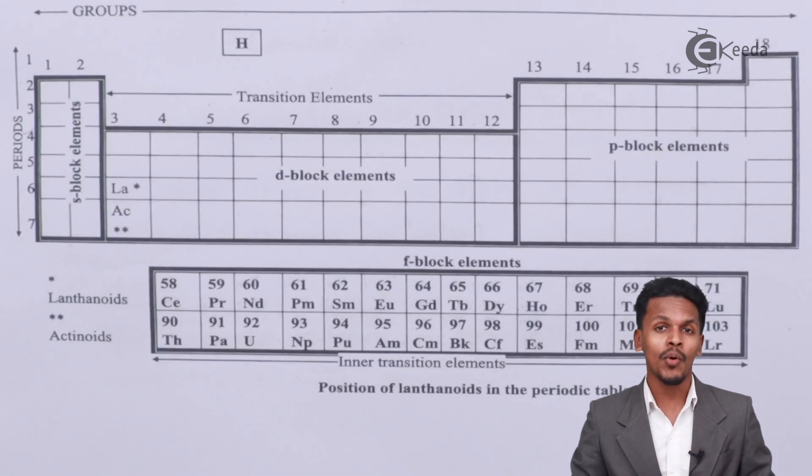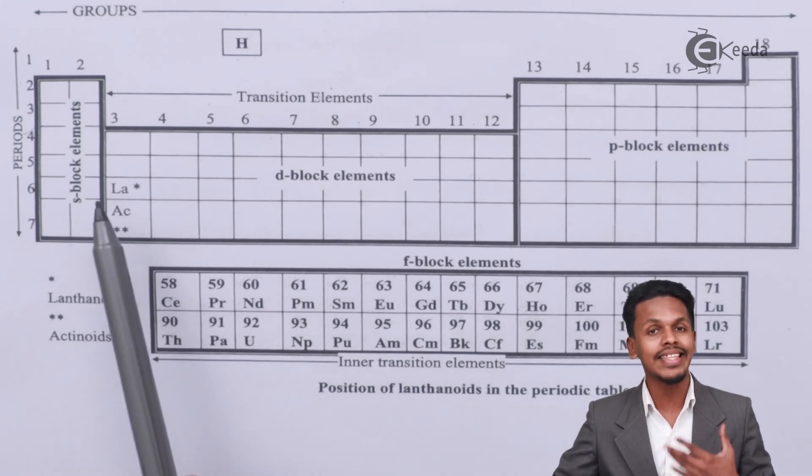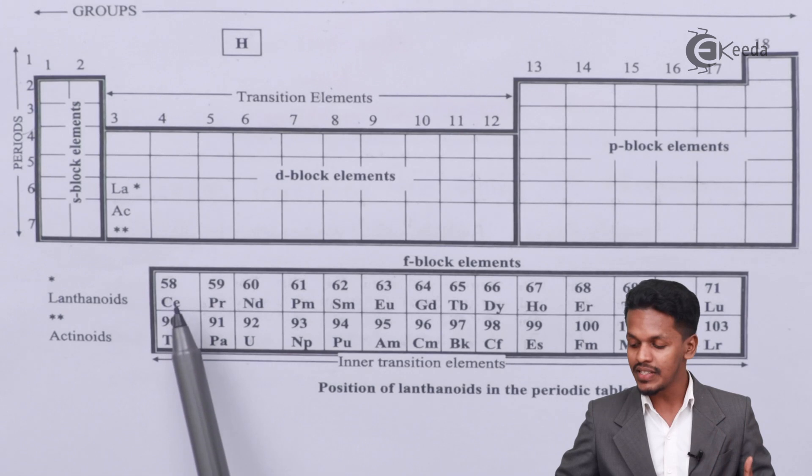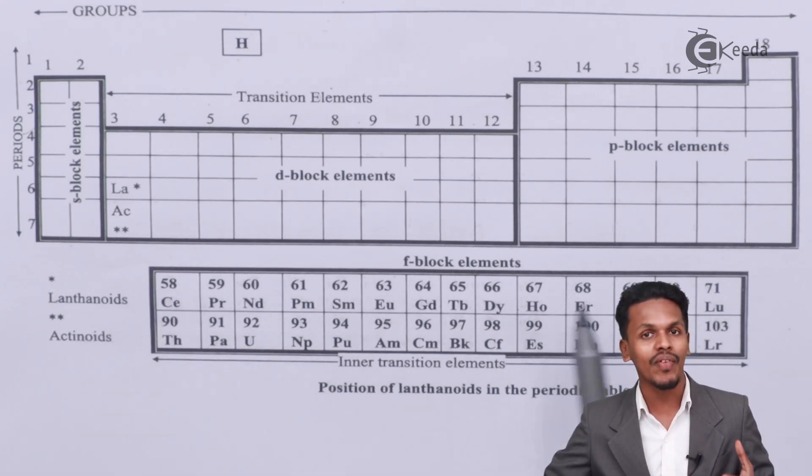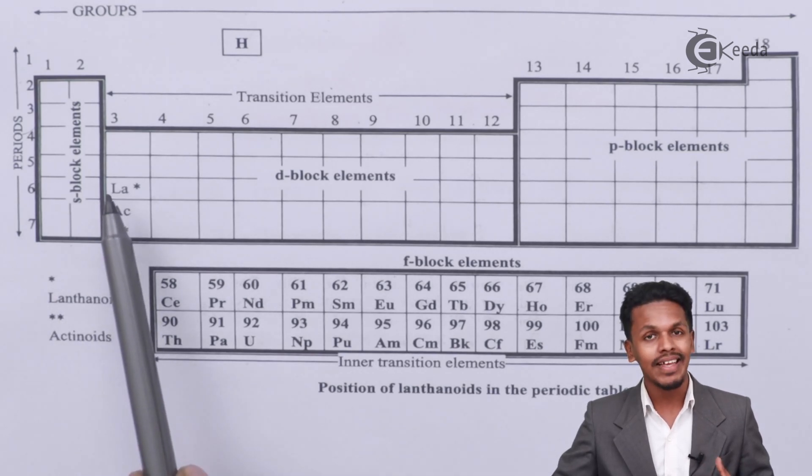Now I am going to talk about lanthanoids. So lanthanoids are nothing but the series after lanthanum. So here basically we can see it starts with cerium and it ends with lutetium. So therefore all these elements or the series of elements are basically known as lanthanoids because they are after lanthanum.